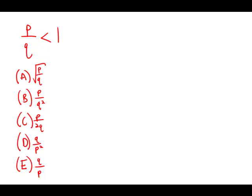If p over q is less than 1 and p and q are positive integers, which of the following must be greater than 1? If p over q is less than 1, what that means is that p is less than q. P is the relatively smaller number and q is the relatively larger number, so we have small over big less than 1.